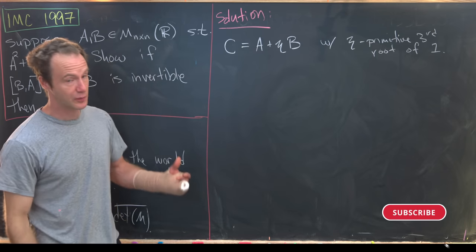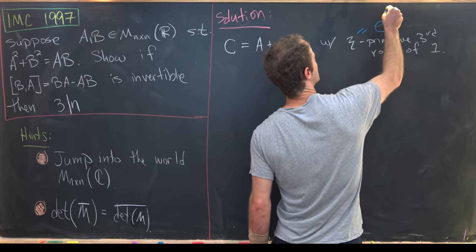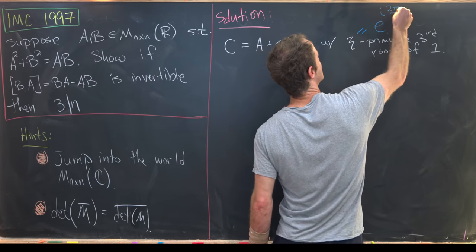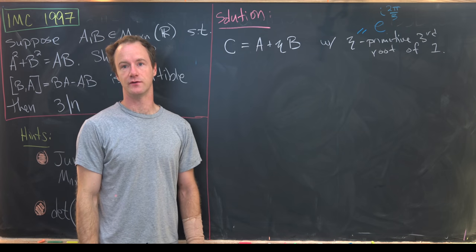Now, there are two primitive third roots of unity, and you can take either of them you want. Generally, you might take e to the i, two pi over three. But it's pretty standard just to say that you're taking a primitive third root of unity.